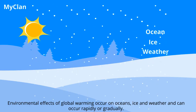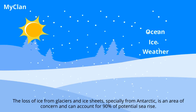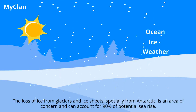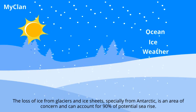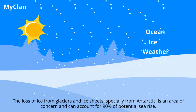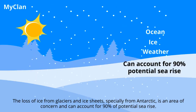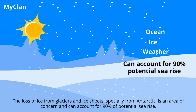Effects of global warming: environmental effects of global warming occur on oceans, ice, and weather, and can occur rapidly or gradually. The loss of ice from glaciers and ice sheets, especially from Antarctica, is an area of concern and can account for 90 percent of potential sea level rise.